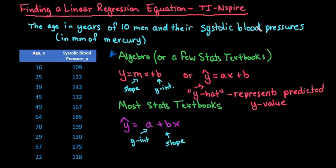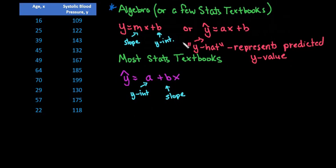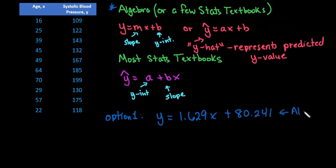So if that was the format that you were using, like I said, if you're using an algebra textbook or you're using this one, we could do option one. We could say that y = 1.629x plus 80.241. And I just rounded to three decimal places. So this would be for an algebra course. If you were in an algebra course, this is what you would use. If your stats textbook uses this, you would actually write it as 1.629x with the hat on it. So this would be for a few stats textbook.